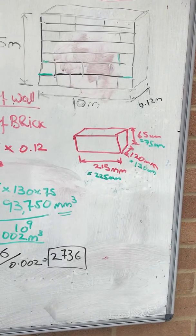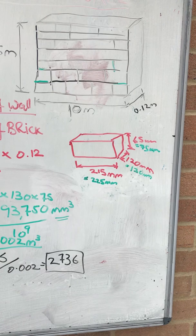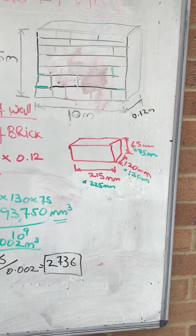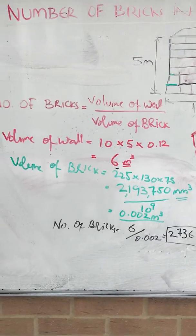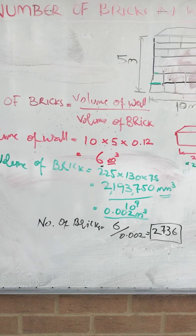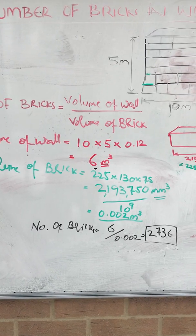In green you can see that with the mortar, 10 millimeter thick mortar, 225 by 130 by 75, and that will give you the 2,193,750 millimeter cubed.